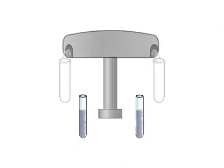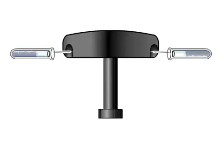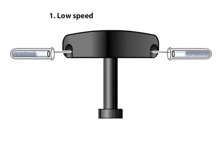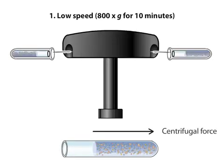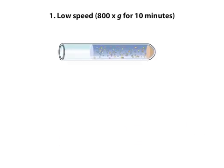An ultracentrifuge can rotate samples at very high speeds, over 100,000 rpm, to produce forces up to 500,000 times greater than gravity. However, the first spin is usually set at a low rotation speed, producing a centrifugal force of about 800 times the force of gravity, for 10 minutes. During this spin, the largest and densest materials sediment first, forming a pellet at the bottom of the tube. This pellet will contain unbroken cells and nuclei.